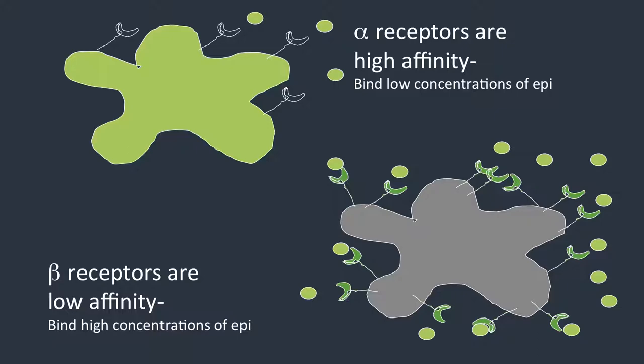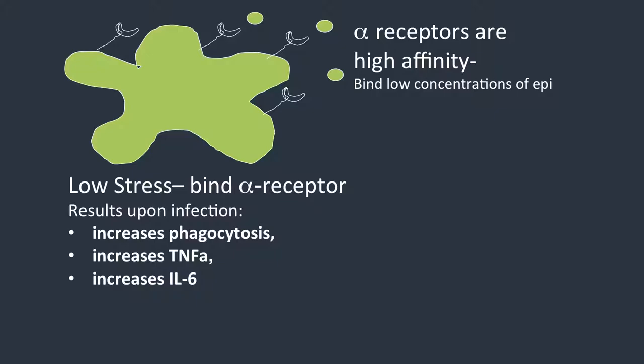The alpha receptors are high affinity receptors, which means even if you have low concentrations of epinephrine, it can bind because they're high affinity, whereas the beta receptors are low affinity receptors. So, if you're in a low stress situation where you have low levels of epinephrine, it'll bind the alpha receptor. And the alpha receptor binding on a macrophage is going to increase phagocytosis, increase TNF-alpha, increase IL-6 — it's going to increase your response to an infection.